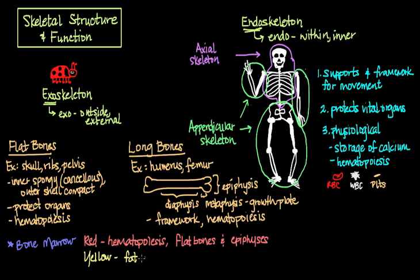Yellow bone marrow on the other hand is primarily a site for fat storage, made up of fat cells called adipocytes. Generally you can find yellow bone marrow within the diaphyses of long bones.